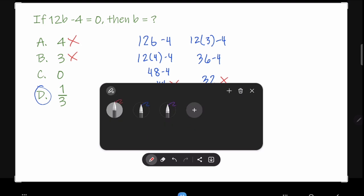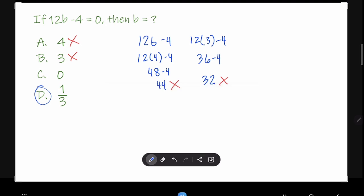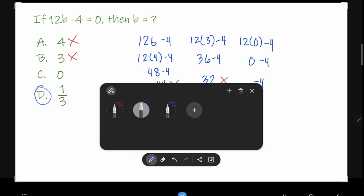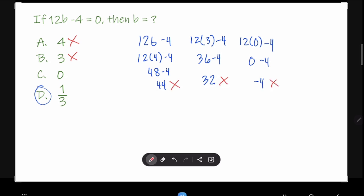If we try letter C, which is 12 times 0 minus 4. So 12 times 0 or any number times 0 is just 0. And 0 minus 4 is just minus 4, or you can read as negative 4, which is not equal to 0. So C is not the answer.